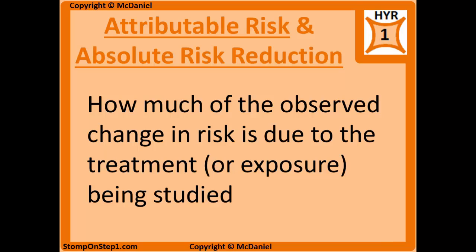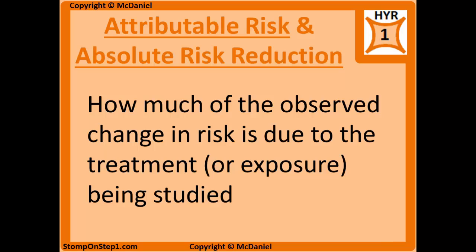The attributable risk, or AR, and the absolute risk reduction, or ARR, are basically how much of the observed change in risk is due to the treatment or exposure being studied. These two terms are pretty similar — they're calculated the same way and essentially the same thing, but used in slightly different situations. In AR, the probability of disease is going down due to a treatment; in ARR, the probability is going up due to an exposure or risk factor. More specifically, AR is the amount of disease that would be eliminated if the exposure was eliminated from the population, and ARR is the amount of disease that would be eliminated if all patients were receiving the drug being studied.